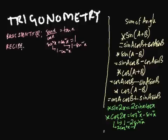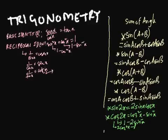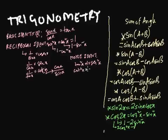The reciprocal identities: one over sine x is cosec x, one over cosec x is sec x, and one over tan x is cot x. Since tan x is sine x over cos x, one over tan x is cot x, which we can also call cosec x over sine x. We also have additional identities: tan squared x plus one is identical to sec squared x, and cot squared x is identical to cosec squared x minus one.